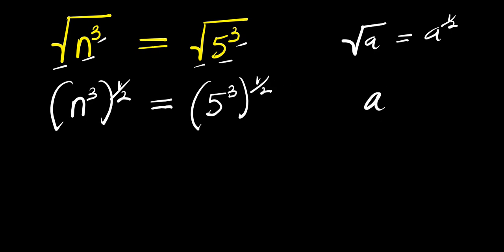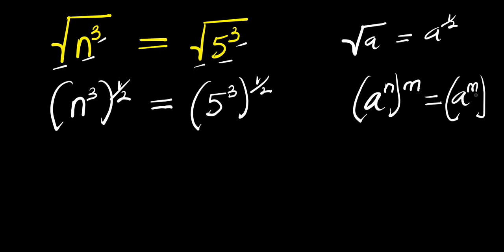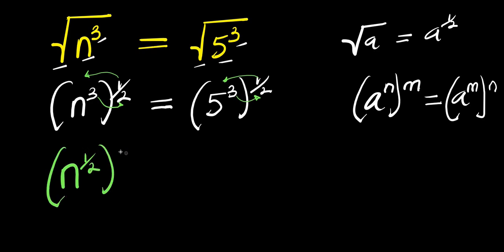Now if you have a to the power n, raised to the power n, this equals a to the power n times n. So that is exactly what I am going to do here — the half will come inside but the 3 will go outside. So we have n to the power of 1 over 2, raised to the power of 3, and this equals 5 to the power of 1 over 2, raised to the power of 3.